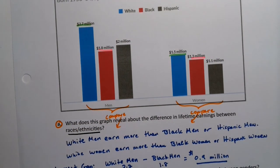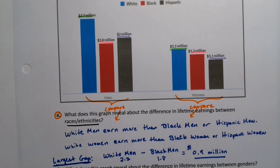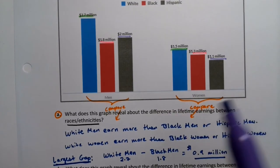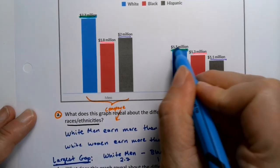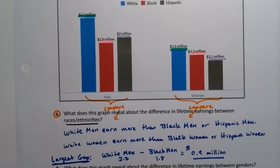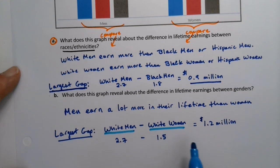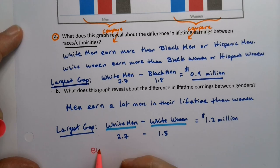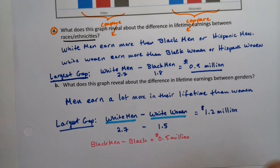For comparison B, you're looking at each color bar across the gender groups: blue to blue (white men vs. white women), pink to pink (black men vs. black women), and purple to purple (Hispanic men vs. Hispanic women). The white-to-white comparison has the largest gap. Black men minus black women is only 0.5 million, which is actually the smallest gender gap.